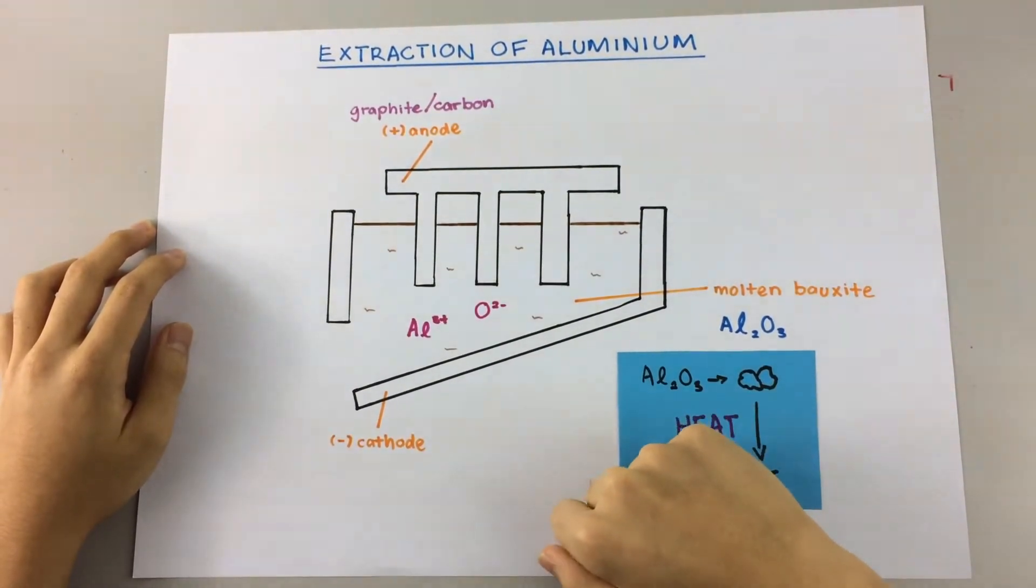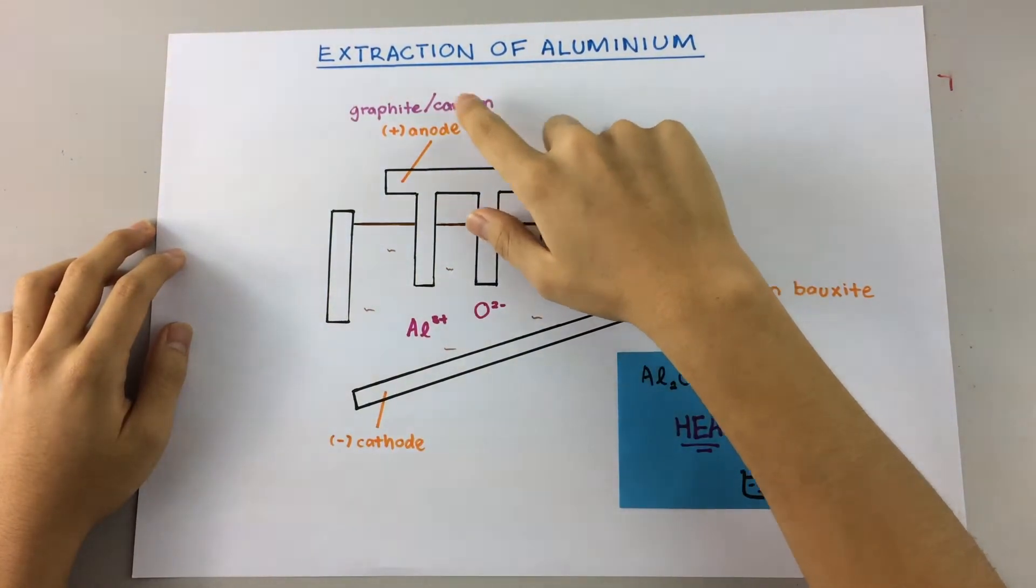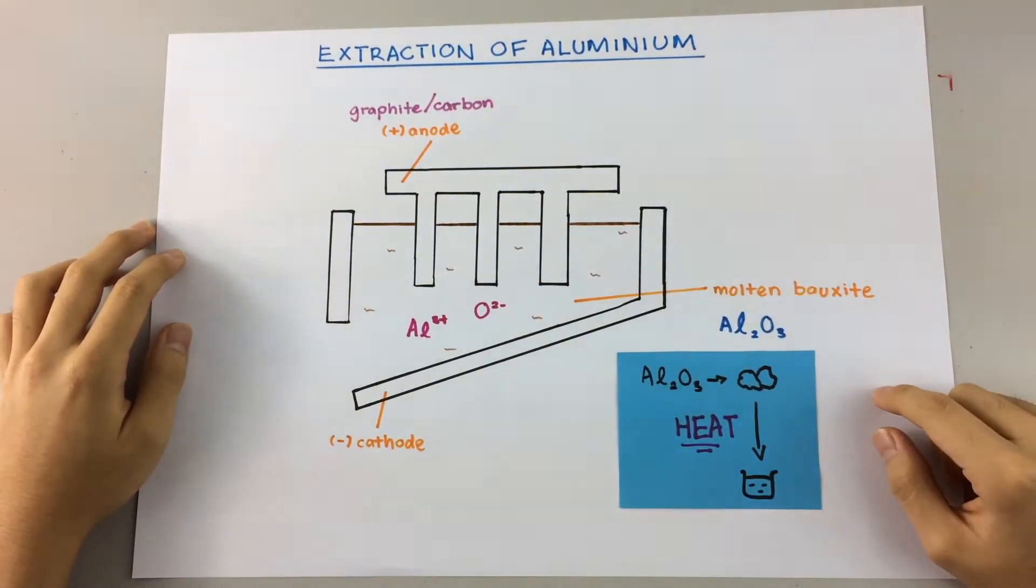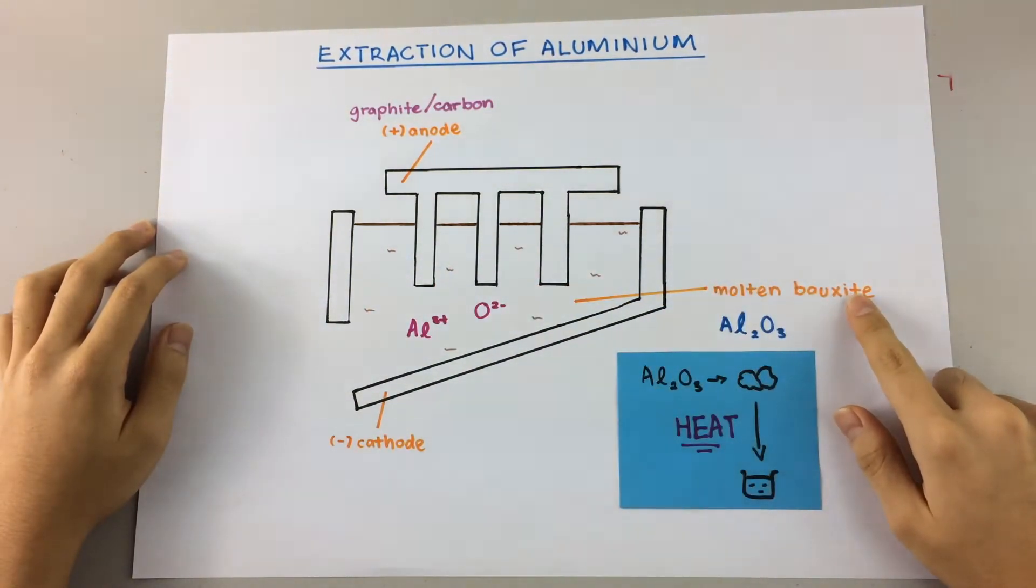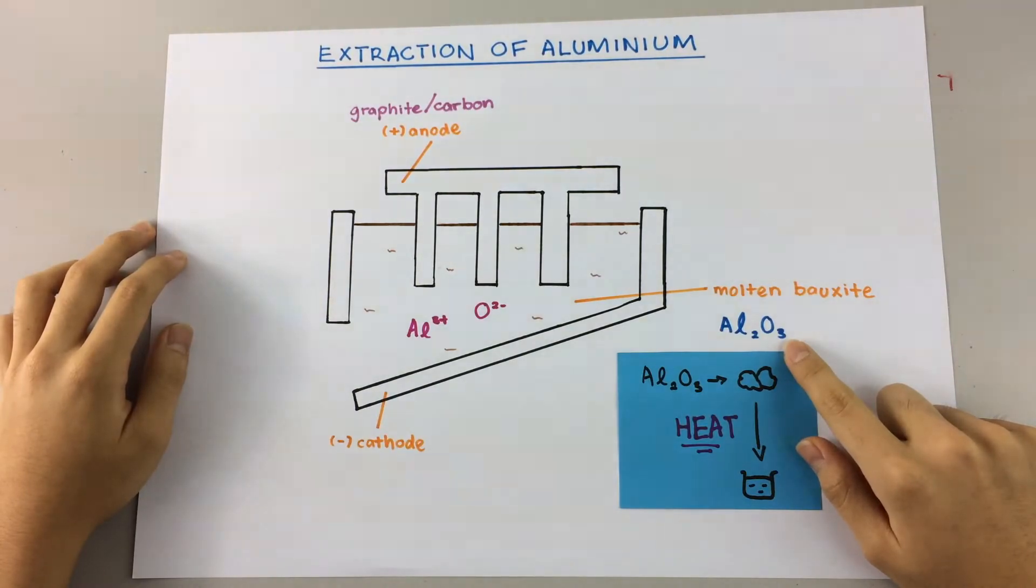And like most other electrolysis experiments, the electrodes are usually made with carbon or graphite. And the solution that we're working with today is molten bauxite. Key word, molten, not aqueous. Molten bauxite is also known as aluminum oxide, in formulas, Al2O3.